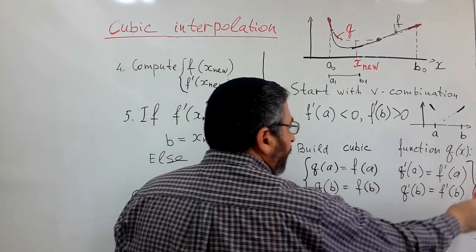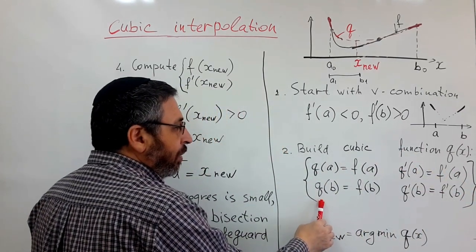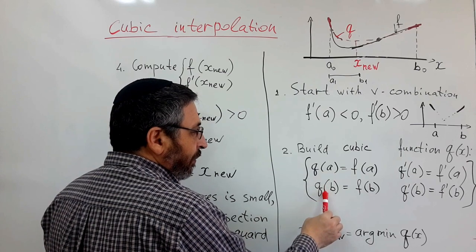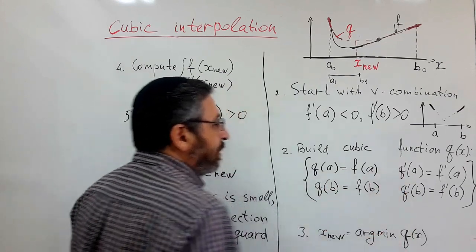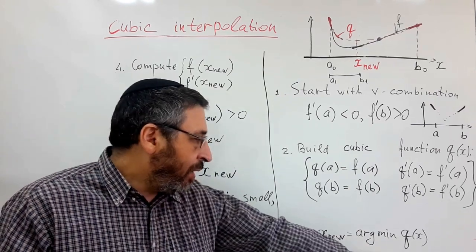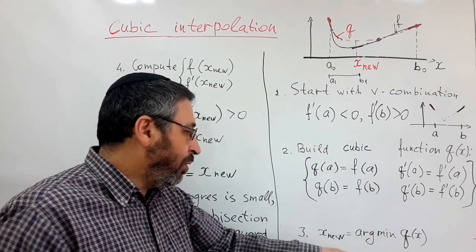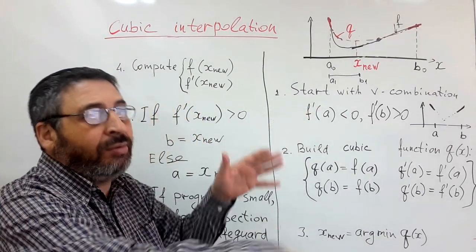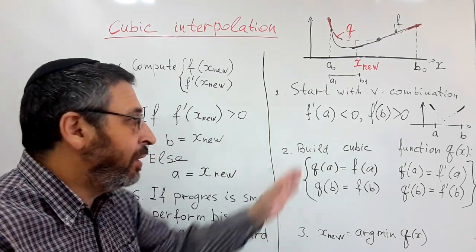We can build a cubic polynomial which has the same values and the same derivatives at those points. Then we will minimize this polynomial and use this new point to continue our iterative process.